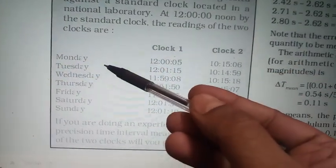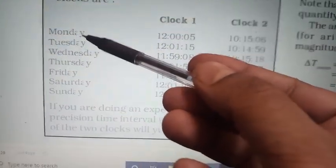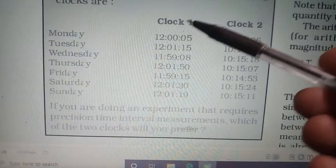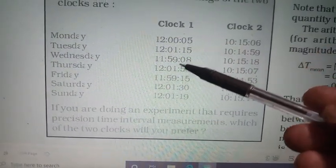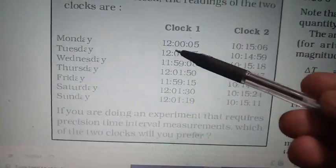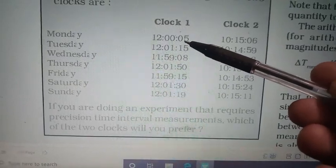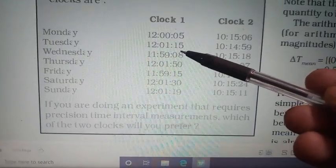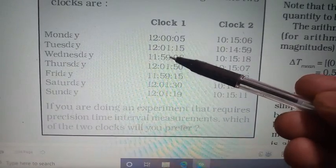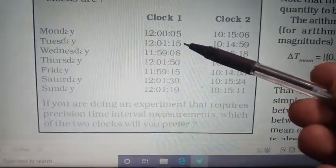We can give the readings from Monday to Sunday. There are two clocks - Clock 1 shows readings at 12:00 with comparison to 5 seconds, and we can give the readings from the clock at 12:00.